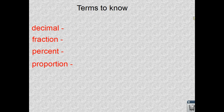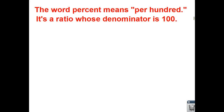A few terms to know — please copy those down in your journals and define them. Just a reminder: we talked about this in class and in a previous video. Very important — the word percent means per hundred, so per 100. It's a ratio whose denominator is 100.